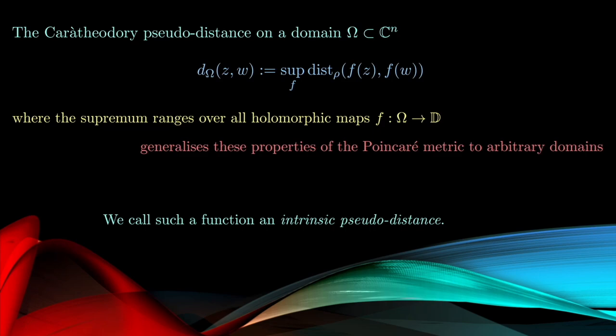So what we do is we take two points in our domain, we map them via a holomorphic map into the disk, and then we compute the Poincaré distance in the image, and then we take the supremum of this quantity over all such holomorphic maps.